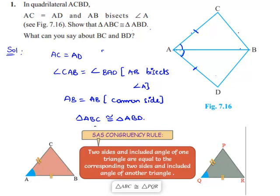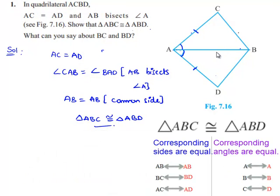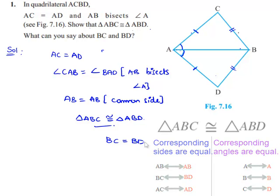Therefore, if two triangles are congruent, their corresponding sides and angles will be equal. Therefore, we can say that BC and BD will be equal to each other — that is, BC is equal to BD.